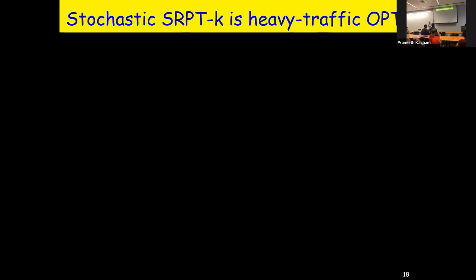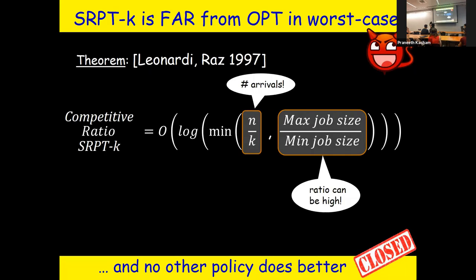It turns out you can say something, and this is going to be one of our big theorems: in the stochastic setting, in the MGK setting, SRPT-K is heavy traffic optimal. There's a log base K factor in the competitive ratio, and the counterexample in the paper is specifically for K equals two servers, where they demonstrate the packing issue.